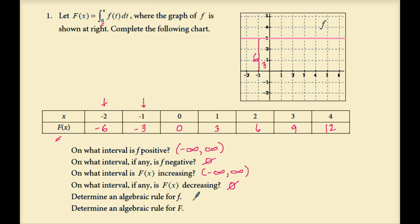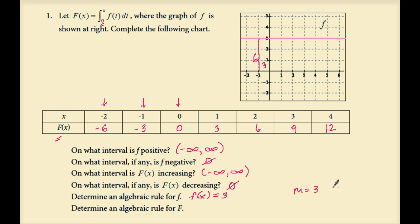To determine an algebraic rule for f: as you can see, this is just the horizontal line 3. So the algebraic rule is f of x equals 3. That means for uppercase F of x the slope is constantly 3, so uppercase F will be a line with slope 3. Its y-intercept: at 0 the function value is 0. So since the slope is 3 and the y-intercept is 0, uppercase F of x equals 3x.